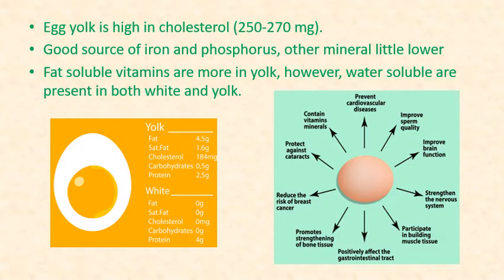Egg yolk is high in cholesterol, which is sometimes one of the negative aspects of egg consumption. It is a good source of iron and phosphorus, with other minerals slightly lower. It has fat-soluble vitamins more in yolk, whereas water-soluble vitamins are present both in white and yolk. The table shows specific nutritive values for yolk and white separately, and the chart on the right shows the role of egg in human health, which is very important to know though not exactly in the syllabus.